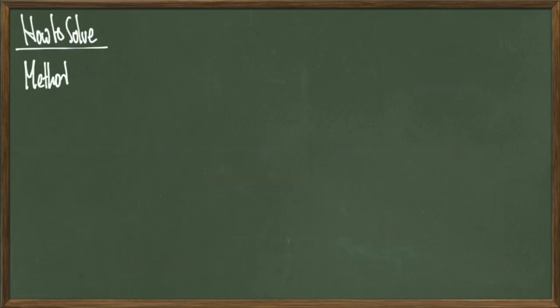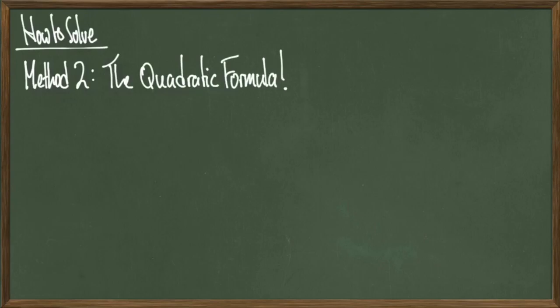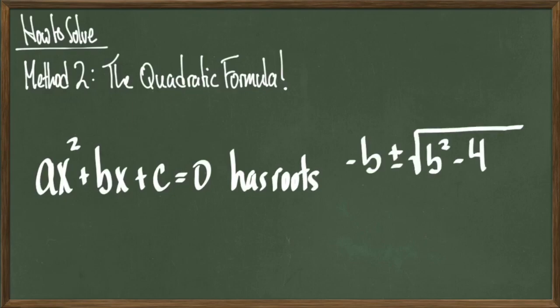Now we need to tackle the question of what to do when our polynomials don't factor. So this is method 2, where we use the quadratic formula. The quadratic formula says that if I have a quadratic equation ax squared plus bx plus c equals 0, then it has roots negative b plus minus the square root of b squared minus 4ac over 2a. The thing about the quadratic formula is that it always works, but if our polynomial factors, it's generally a faster process. So if your polynomial does not factor, then you use this formula.